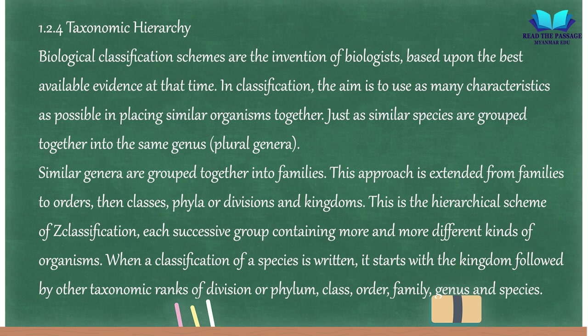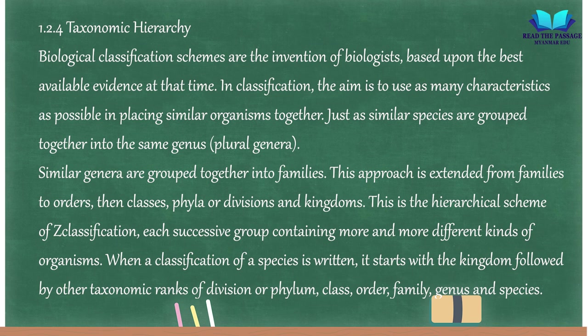1.2.4 Taxonomic Hierarchy. Biological classification schemes are the invention of biologists based on the best available evidence. The aim is to use as many characteristics as possible in placing similar organisms together. Just as similar species are grouped into the same genus (plural: genera), similar genera are grouped into families, then orders, classes, phyla or divisions, and kingdoms. When a classification is written, it starts with the kingdom followed by division or phylum, class, order, family, genus, and species.